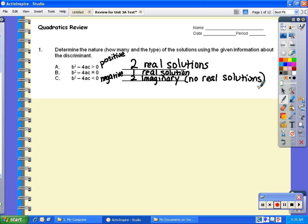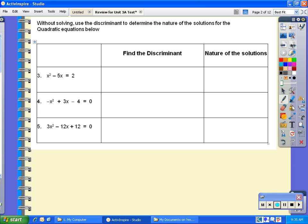If you need to pause this at any time, please feel free to do so. For numbers 3 through 5, without solving, you're determining what the value of the discriminant is.